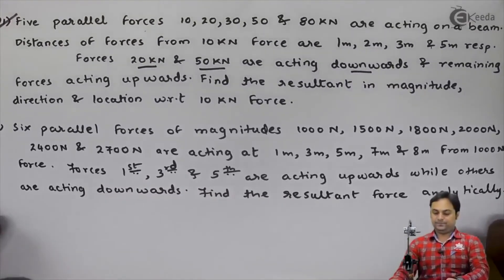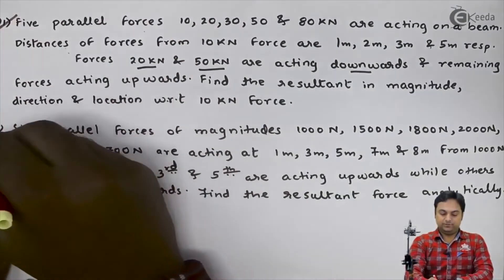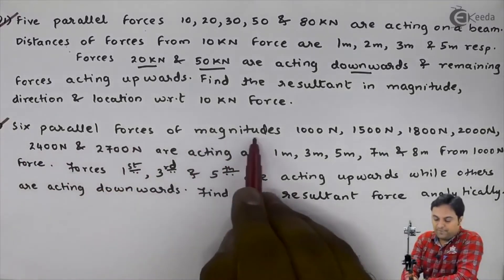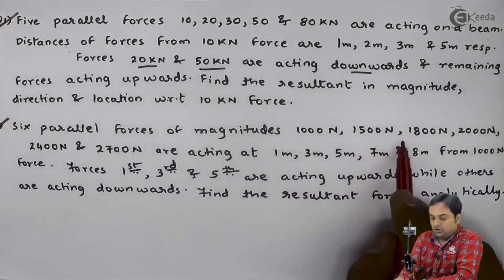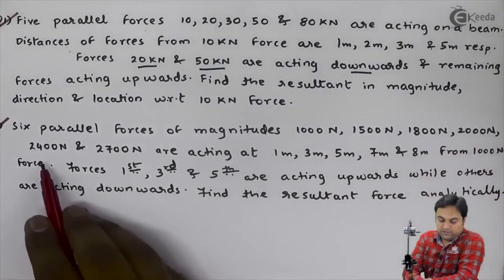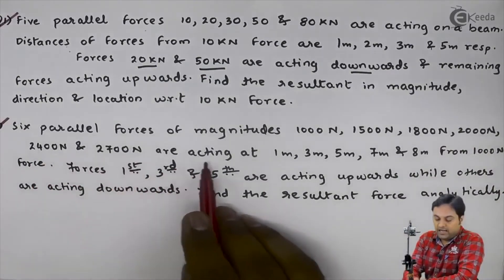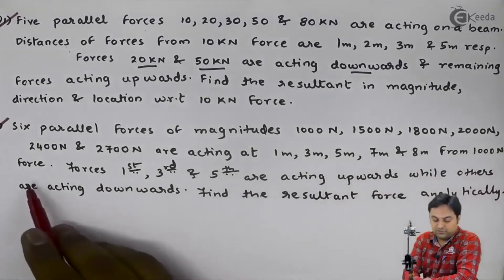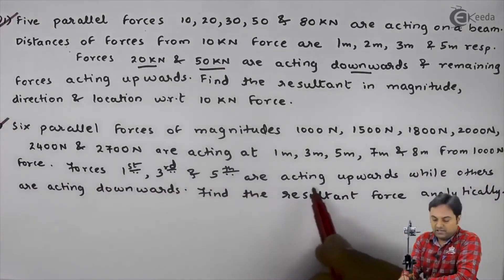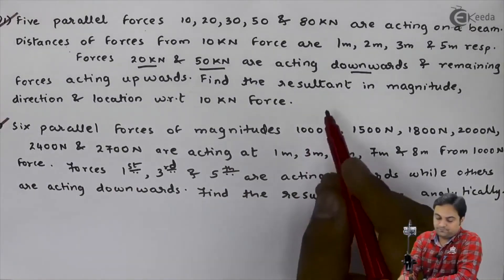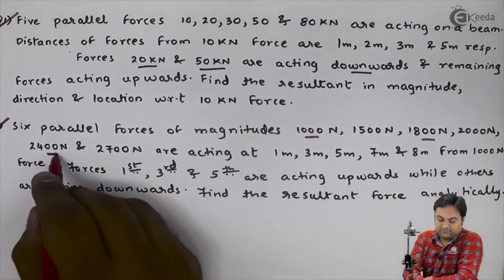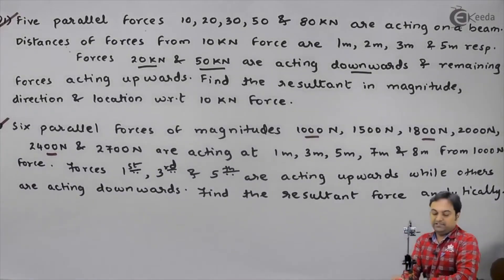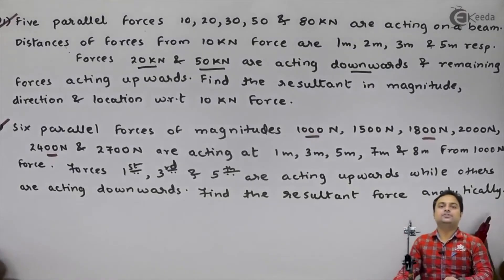Let us solve question number 2. Six parallel forces of magnitudes 1000 N, 1500 N, 1800 N, 2000 N, 2400 N and 2700 N are acting at 1 m, 3 m, 5 m, 7 m and 8 m from the 1000 N force. Forces 1st, 3rd and 5th are acting upwards while the others are acting downwards. Find the resultant force analytically.